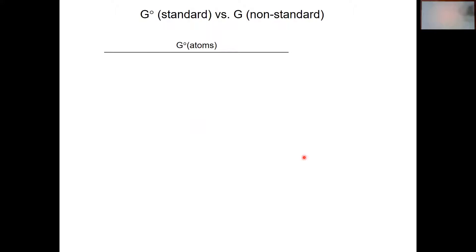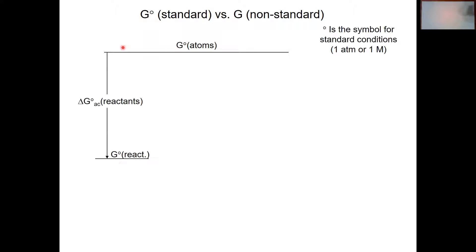So we have a question: how does G standard and non-standard change during the course of a reaction? If we look at a typical Gibbs free energy plot, at a certain point we have the Gibbs free energy value of free-floating gaseous atoms. If those free-floating gaseous atoms combine to form reactants, they're going to be on a lower shelf — delta G standard of our reactants. Standard conditions for a solution is one molar, for a gas is one atmosphere. What if our reactant is 0.05 molar instead of one molar? Is delta G the same? Absolutely not.